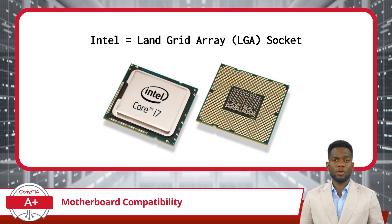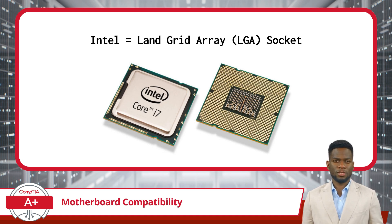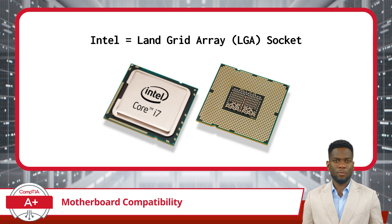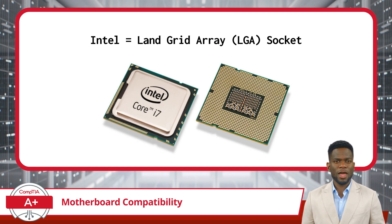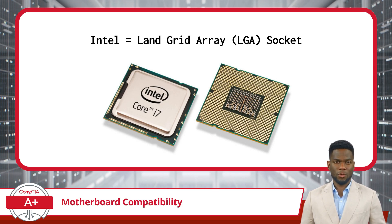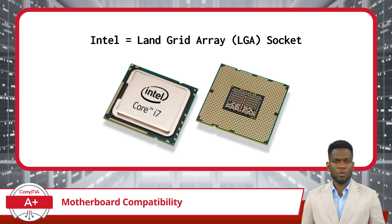Intel processors typically use an LGA-type socket, which is short for Land Grid Array. In this configuration, the CPU underside is devoid of pins, featuring instead a flat surface with an array of contact points or pads. This corresponds to the motherboard socket, which contains tiny holes where metal contacts reside. When installed, these contacts align precisely with the pads on the CPU, creating a direct and secure connection. This design facilitates easy installation and removal of the CPU, reducing the risk of damage during handling.